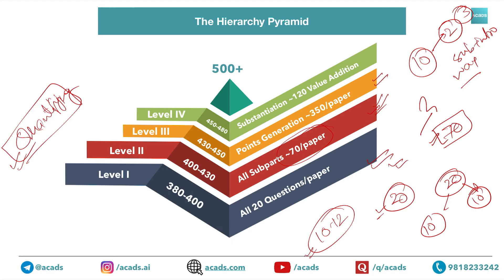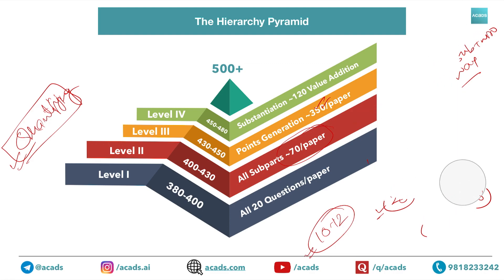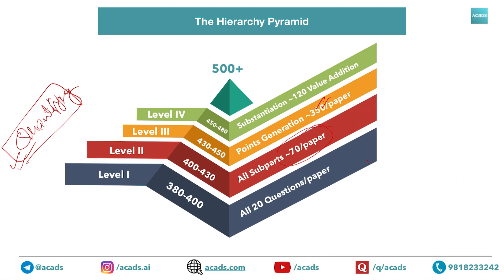The third level is being able to generate subpoints for all 70 subparts. If you generate on average five subpoints per subpart, that is 350 points total. If you generate four per subpart, it becomes around 280 to 300. I strongly recommend writing at least five points in each subpart.